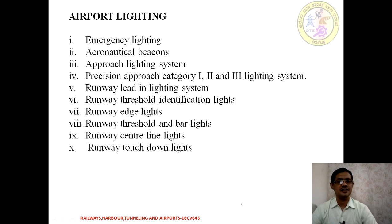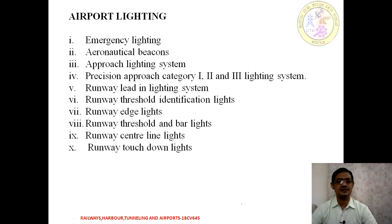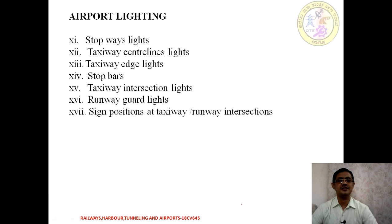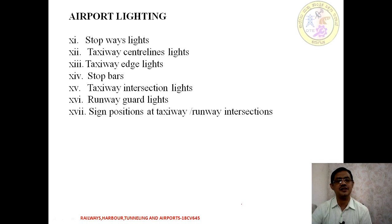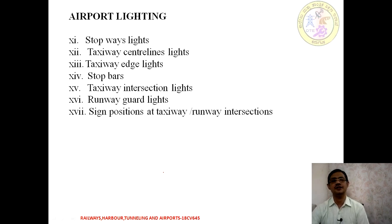Types of airport lighting include: emergency light, aeronautical beacons, approach lighting, precision approach lighting for Category 1, 2, and 3, runway lead-in lighting system, threshold identification, edge lights, threshold and bar lighting, runway centerline and runway touchdown lighting. Additionally, there are taxiway edge lights, centerline of a taxiway, taxiway intersection lights, runway guard lights, and sign positions with respect to taxiway and runway intersection for poor visibility or night operation.